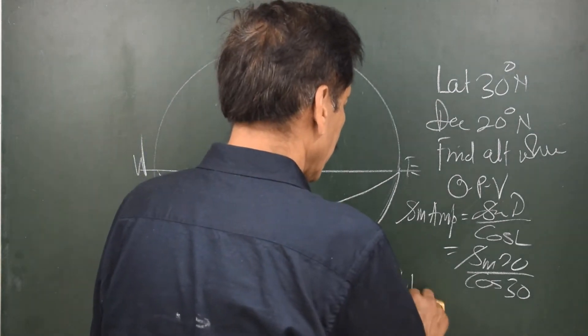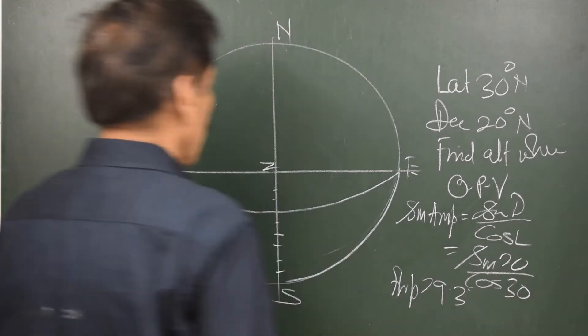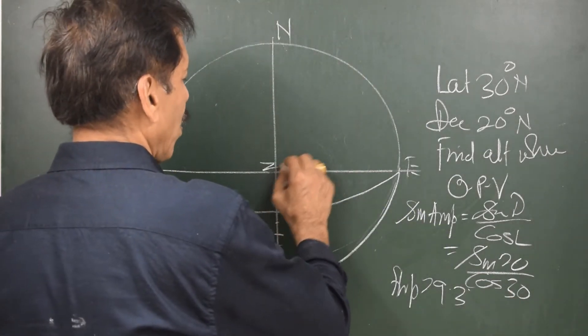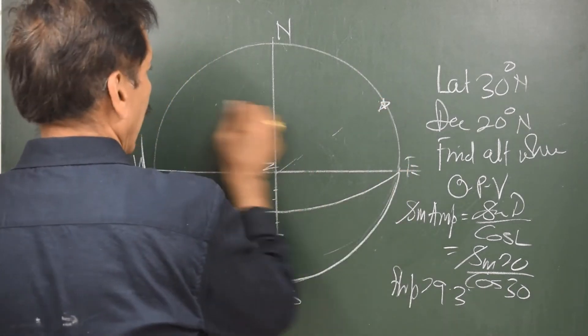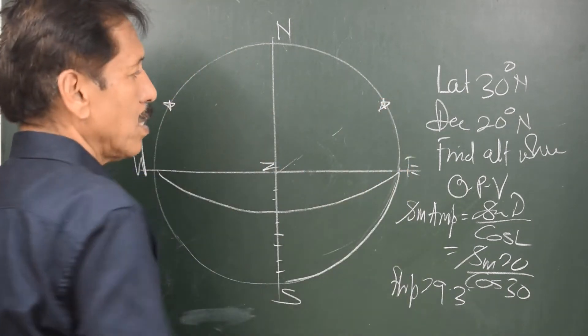Amplitude is 29.3 degrees. So, the angle from the centre is 29.3 degrees. I find the position here and similar position on the west side is over here.